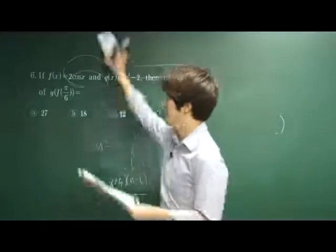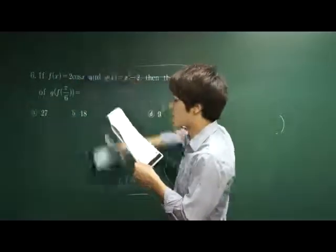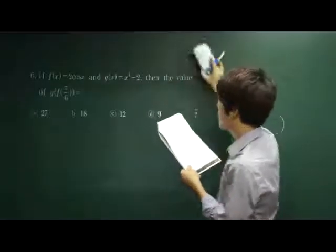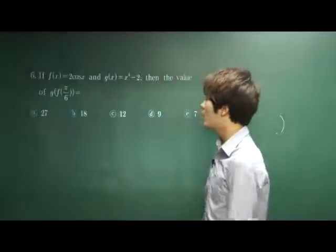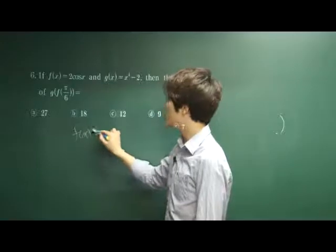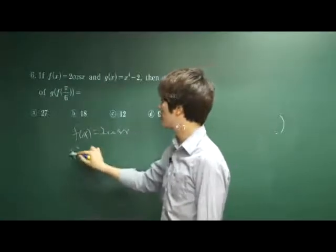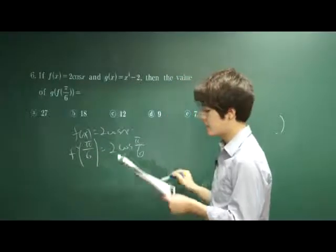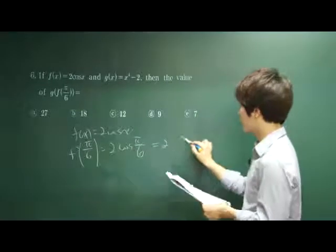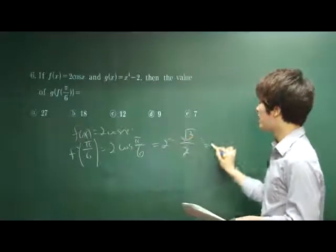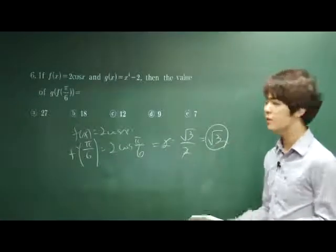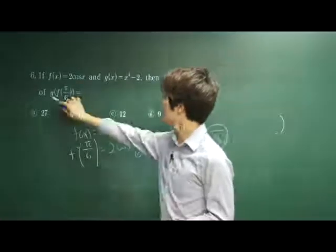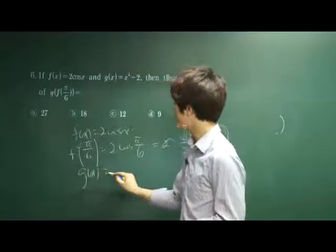Let's move on to number 6. Number 6 says, if f(x) is 2 cos x and g(x) is x to the 4th minus 2, then the value of this combination of g and f function is. Let's start one by one. f(x) function is 2 cos x, and we are looking for f(pi over 6), which is 2 cos x, which is 2 times square root of 3 over 2. Cancels out. We are left with square root of 3. So let's put square root of 3 in place of g(x) function.